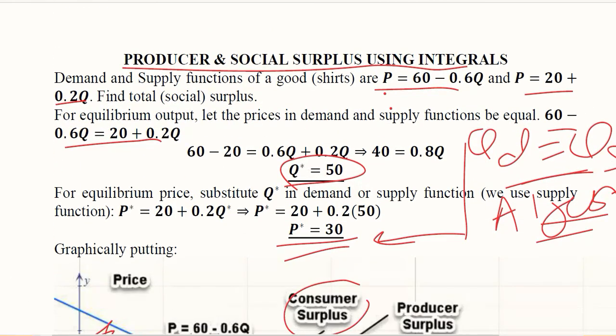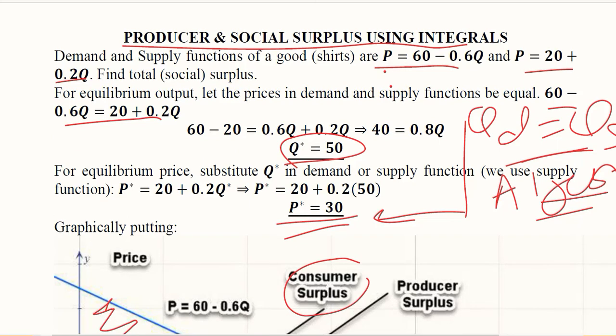We are now capable of finding the consumer surplus, producer surplus, and social surplus by using the formula of integration — that is, definite integrals — as well as the formula for the area of triangles. Thank you.